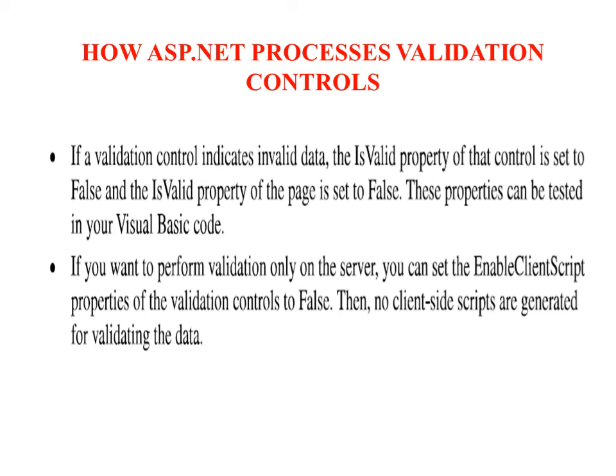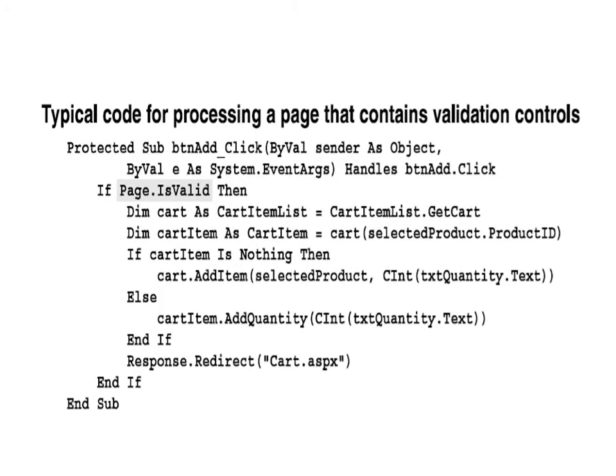The Display property determines how a validator's error messages are displayed. You typically set the display property to dynamic if you use two or more validators to validate the same control.